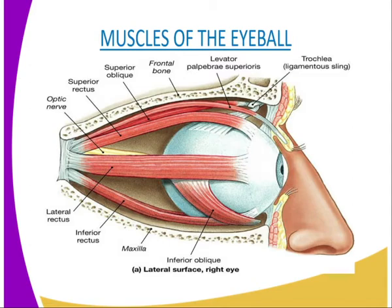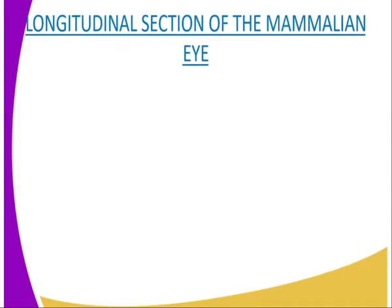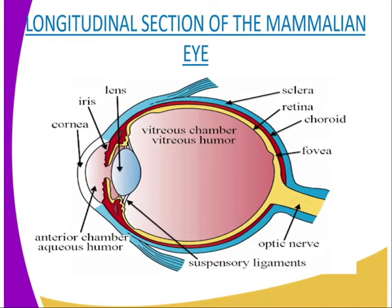In front of the eyeball, there are two thin folds of skin known as eyelids which protect the eye. From the edge of the eyelids are many hairs called eyelashes which protect the eye from small foreign particles. The eyebrows are raised portions of the skin above the eye, covered with hair, whose function is to prevent sweat and dust from entering the eye.